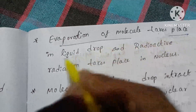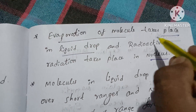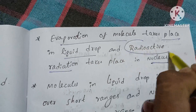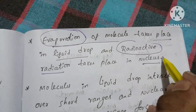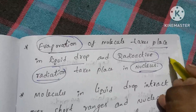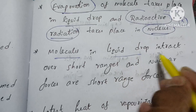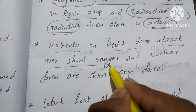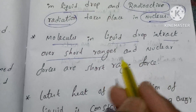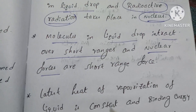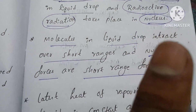Evaporation of molecules takes place in the liquid drop. Similarly, evaporation also occurs in the nucleus. Additionally, molecules in a liquid drop interact over short ranges. Similarly, nucleons in the nucleus also interact over short ranges.